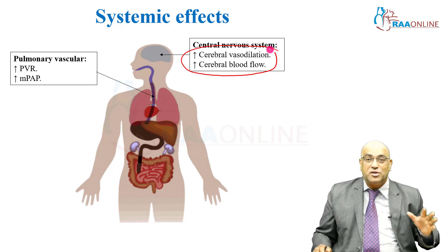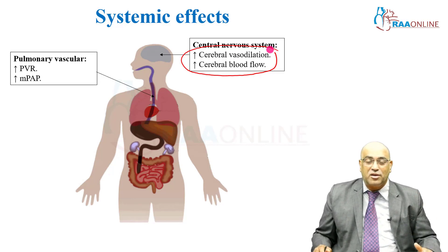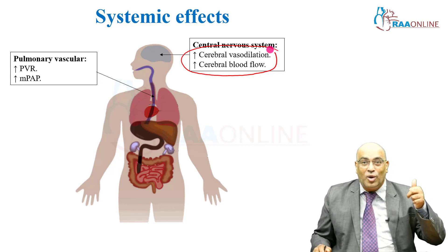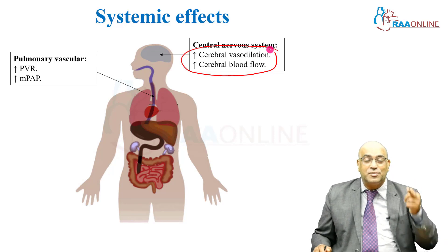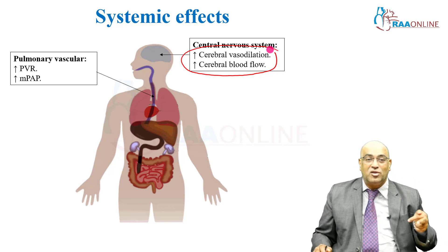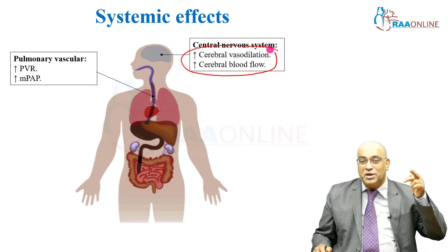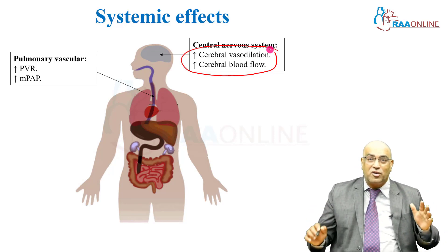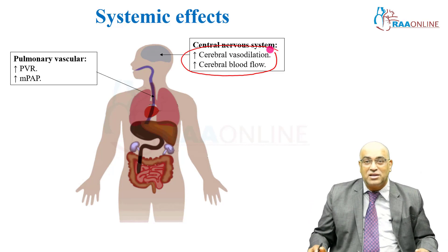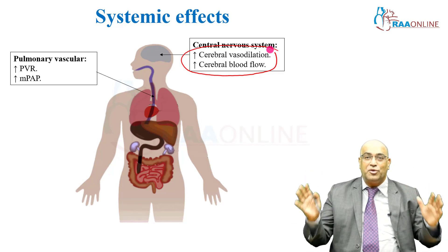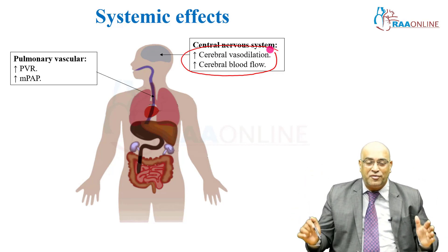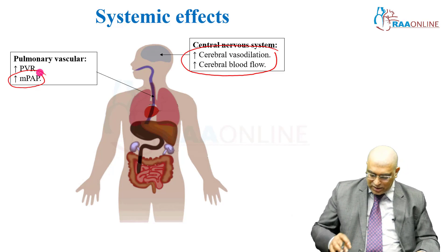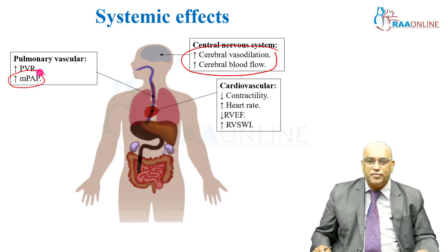The pulmonary vascular system is most affected by carbon dioxide. There is increased pulmonary vascular resistance, which becomes very important particularly in congenital heart disease or when you treat the right ventricle, and it increases mean pulmonary artery pressure.